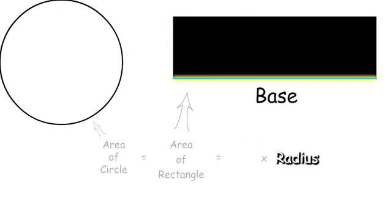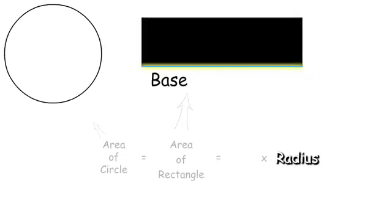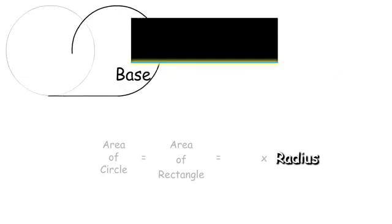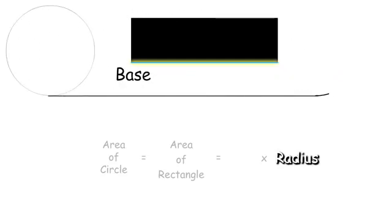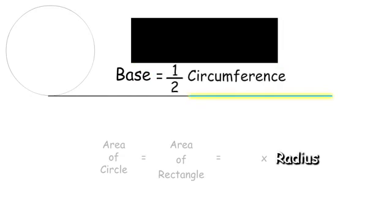To find the base, we need to look at the circumference of the circle. And when we compare the base and the circumference, we can see that the base is equal to one half the circumference.